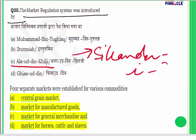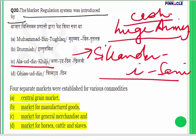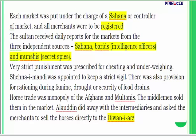Alauddin Khilji, also known as Sikander-i-Sani, needed to control prices since he was paying bare minimum salaries. He strictly regulated the markets and established four separate markets for different commodities: the first for grain, the second for manufactured goods, the third for general merchandise, and the fourth for horses, cattle, and slaves. He even fixed the price of each and every commodity.